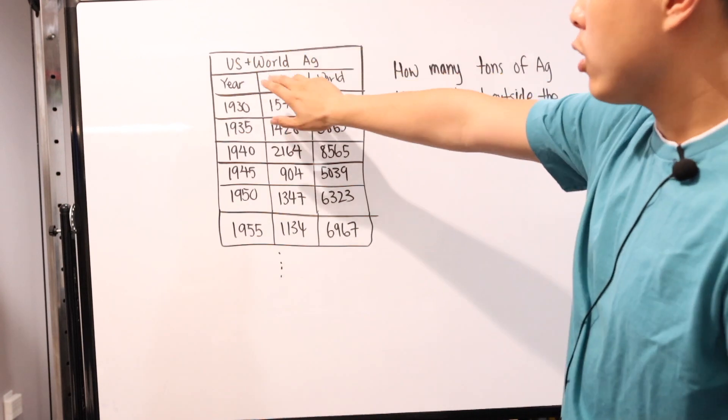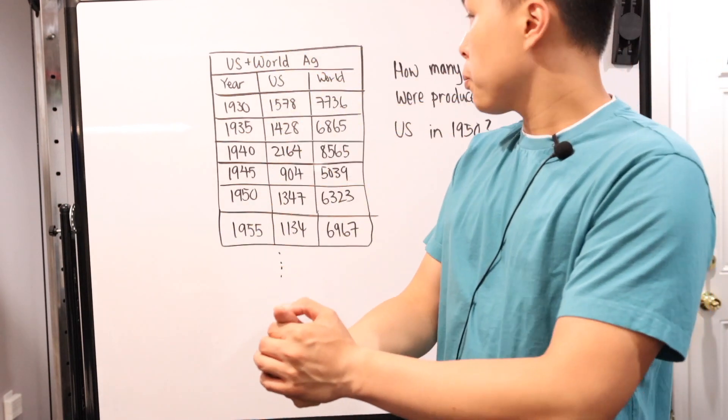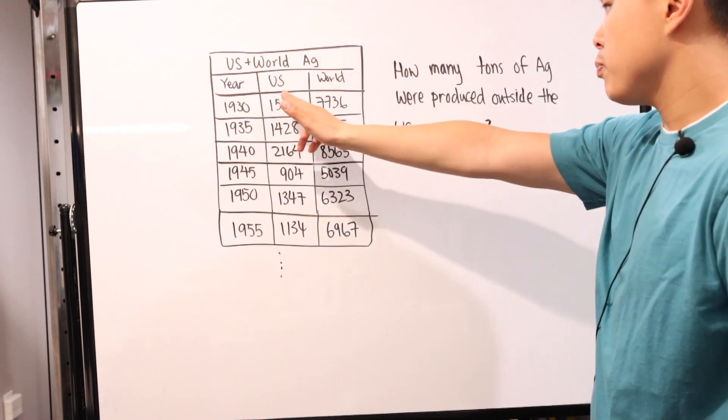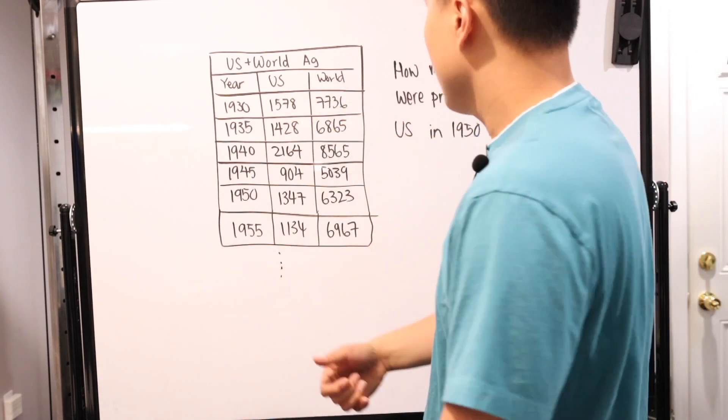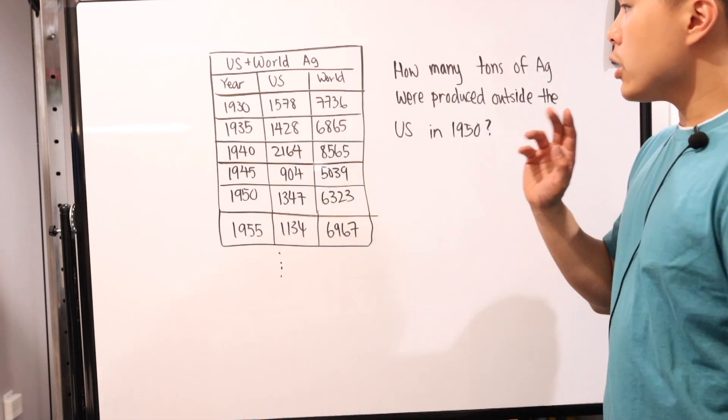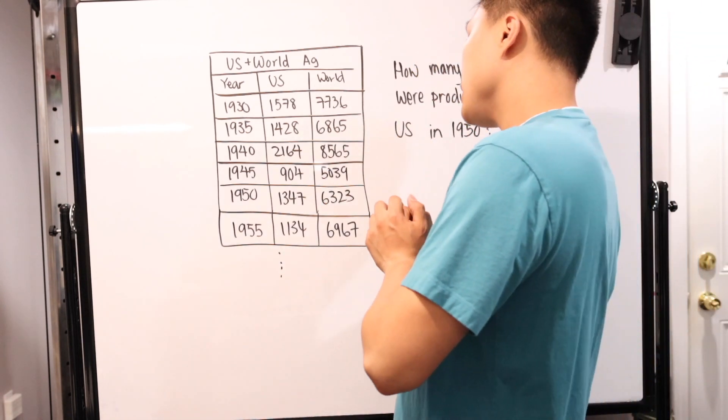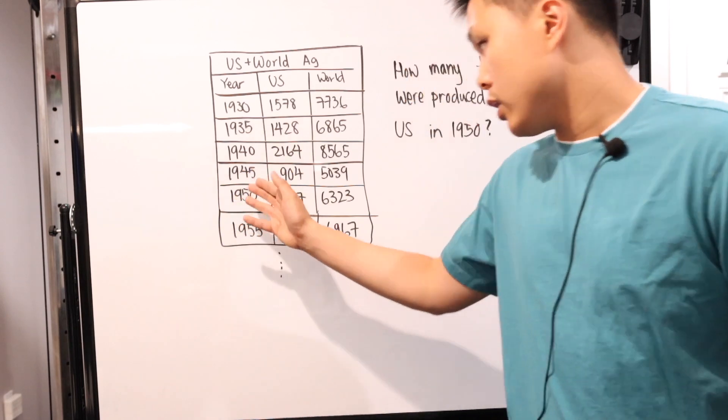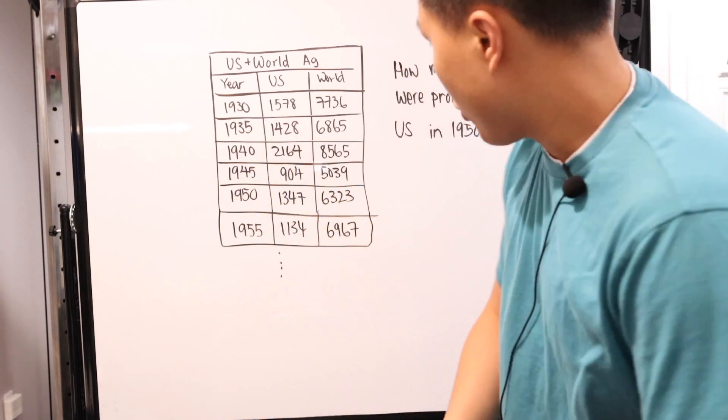So first and foremost, this is a chart of the U.S. and the world's silver production. They give you the year, what's made in the U.S., and then what's made in the entire world. So world includes the U.S. So here it is. You have the year from 1930, 1935, 1940, 1945, 1950, 1955, blah blah blah, and keep on going.